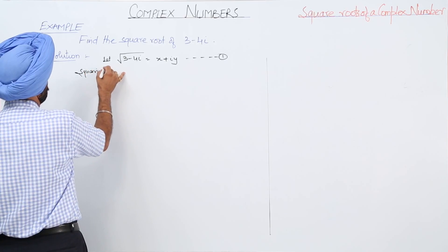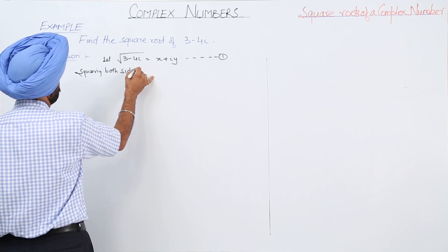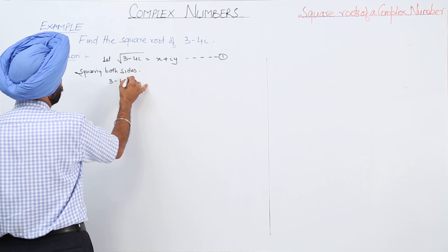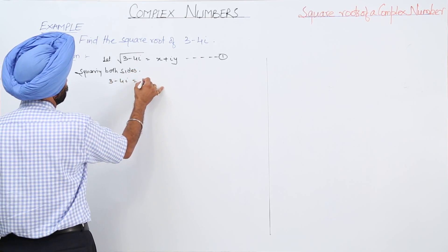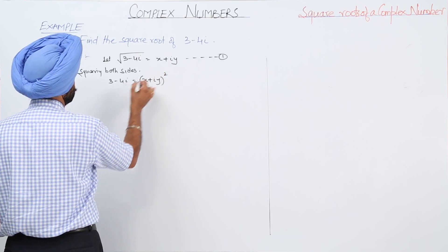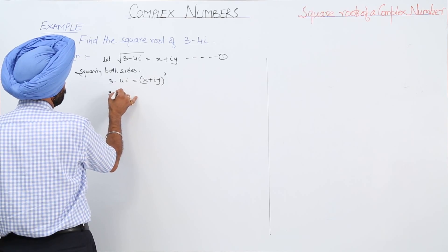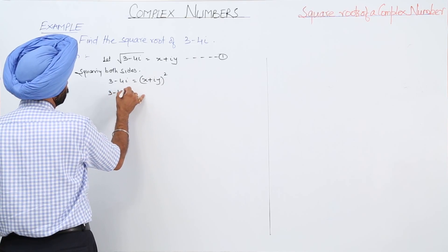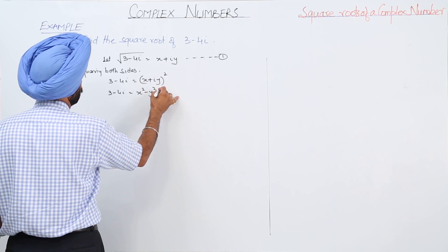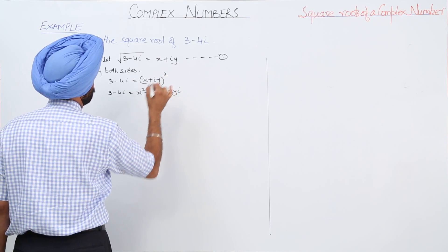Now, squaring both sides: 3 minus 4 iota is equal to x plus iota y, whole squared. Expanding, 3 minus 4 iota is equal to x squared minus y squared plus 2xy iota.